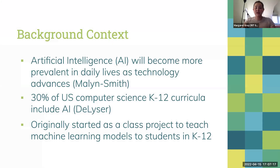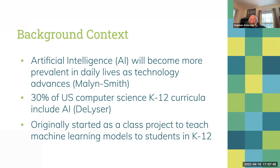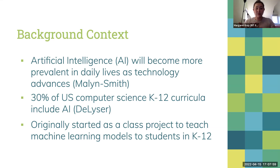For some background context, artificial intelligence is such an important part of our lives and it's going to continue to become increasingly prevalent as technology advances — whether it's Siri or Alexa, or algorithms that decide what news or ads we see. Jobs in the future are also projected to focus more than ever on data analysis, and being able to analyze data and utilize it to make AI applications is really important. Currently, of all US computer science curricula for K-12 students, only 30% include artificial intelligence.